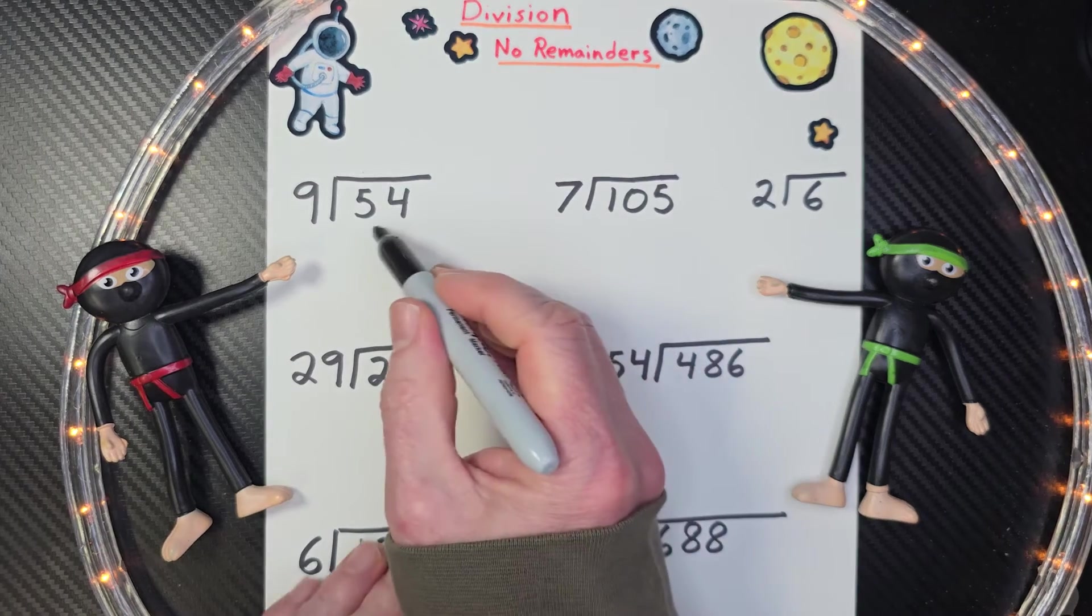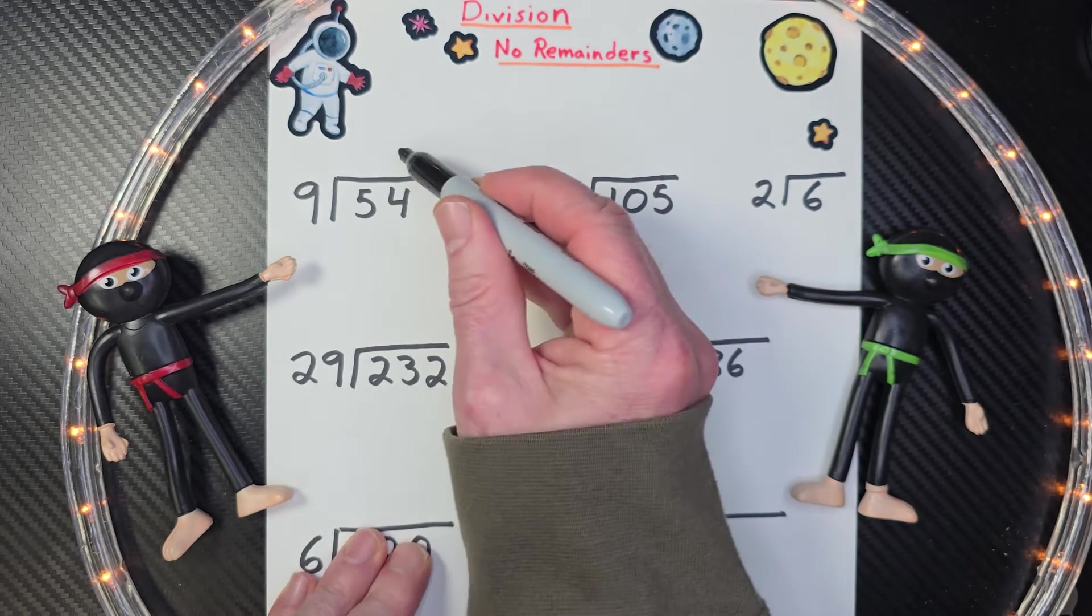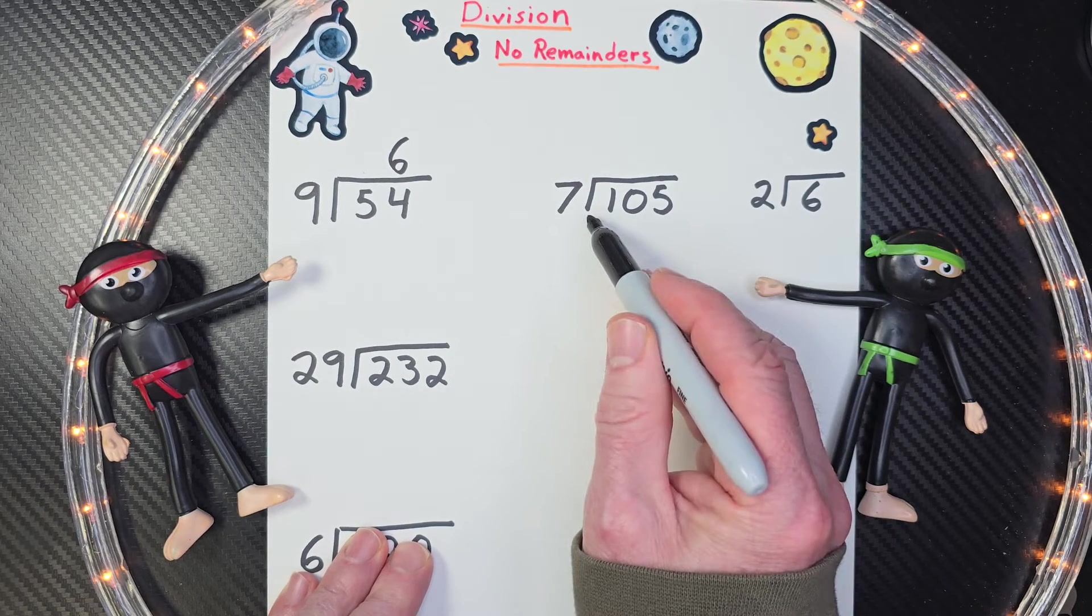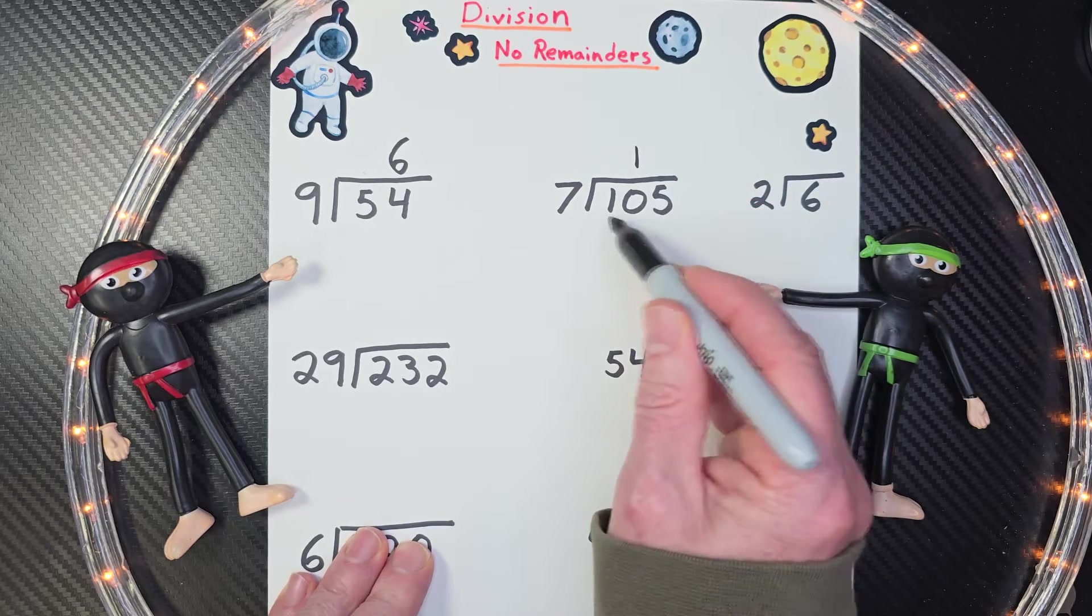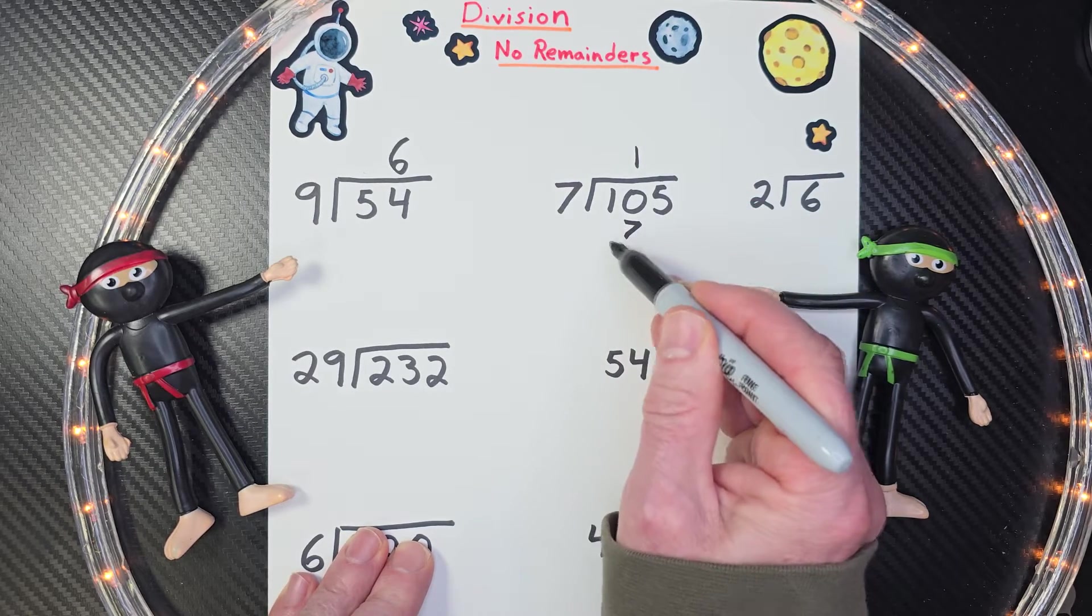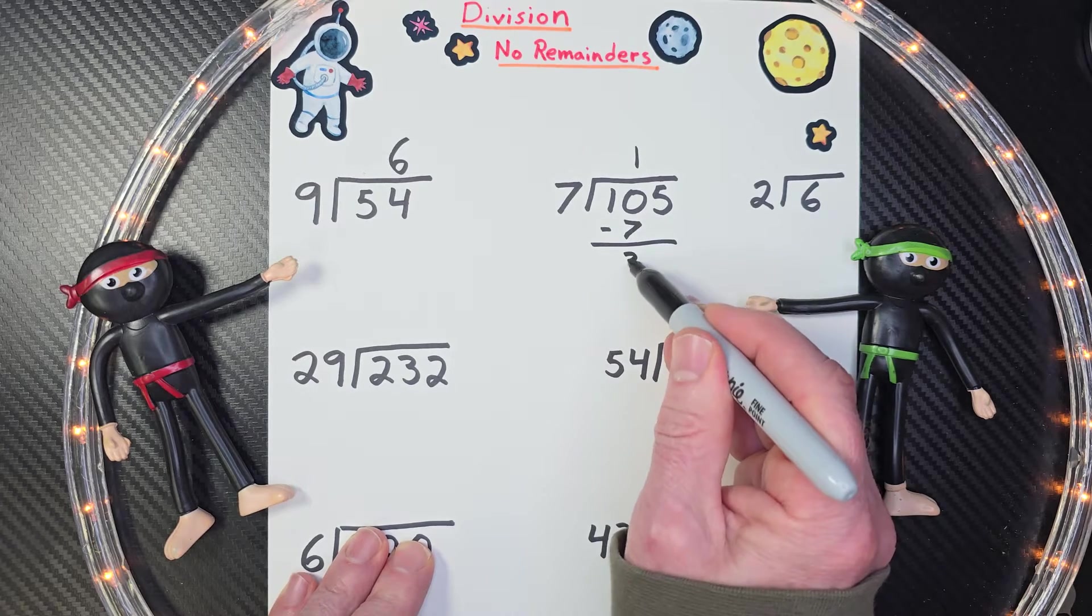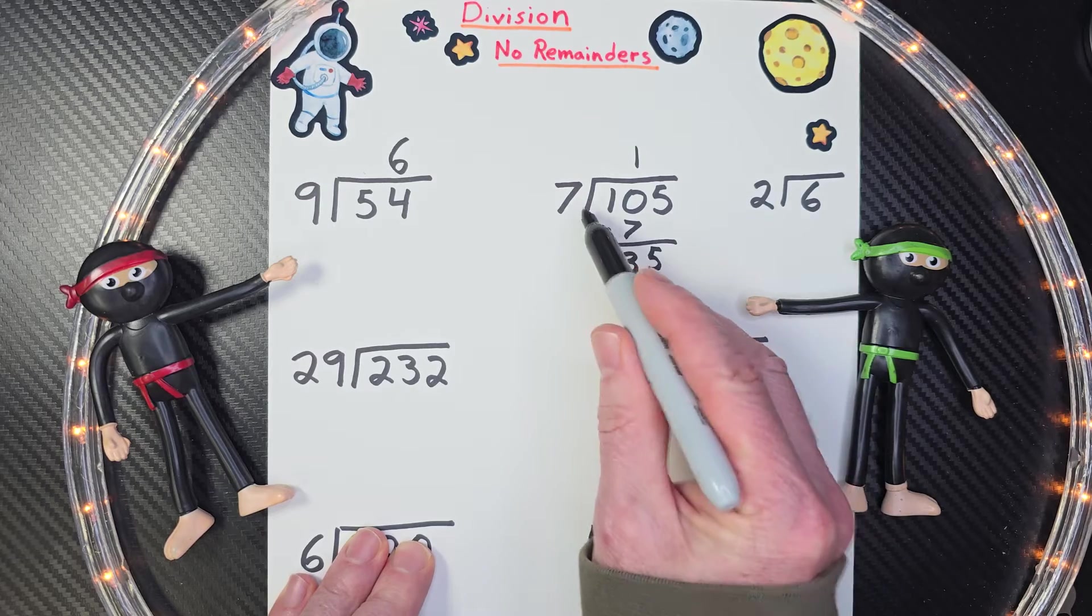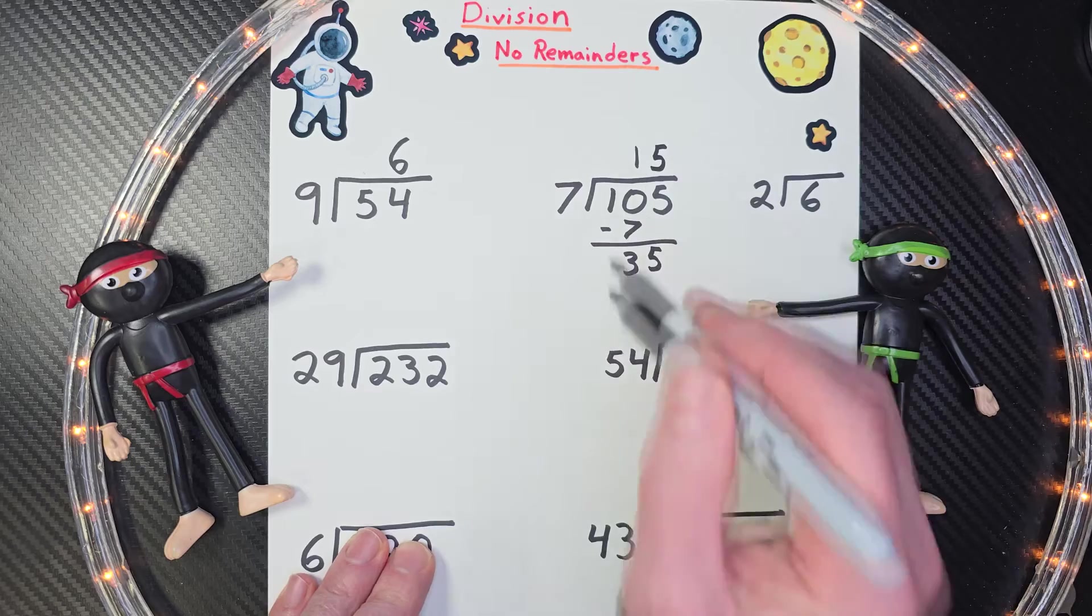First of all, I have 54 divided by 9. What is it, my math ninjas? That's right, six. 105 divided by 7. How many times can I put 7 into 10? One time. So I put one times seven is seven. Subtract. 10 minus seven, three. Bring that next number down. That would be a five. So now how many times can I put 7 into 35? Five times.